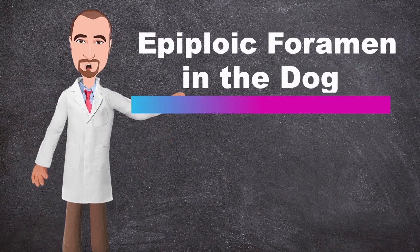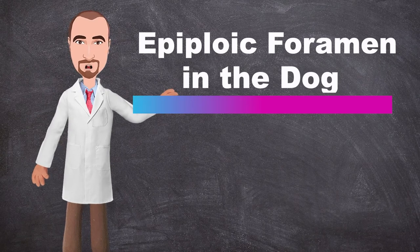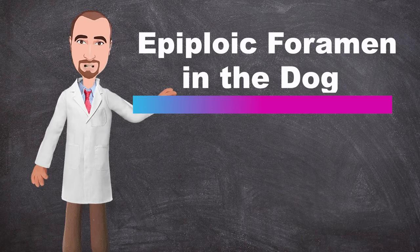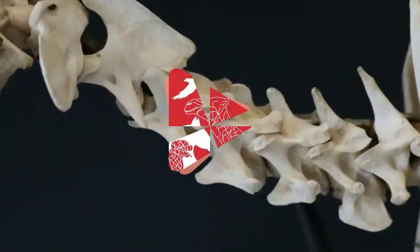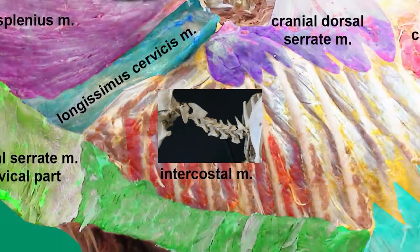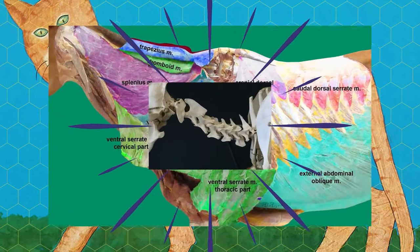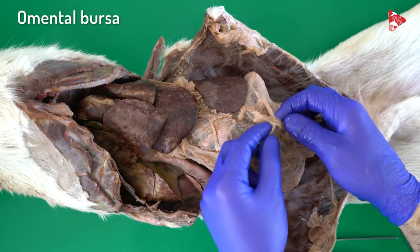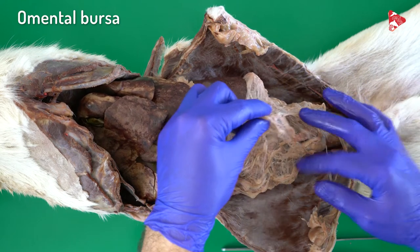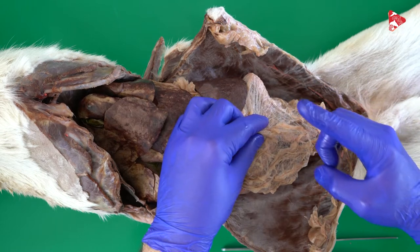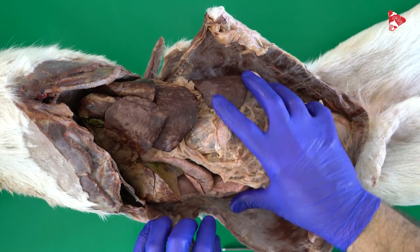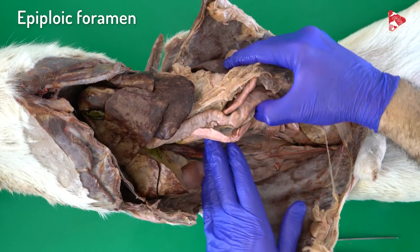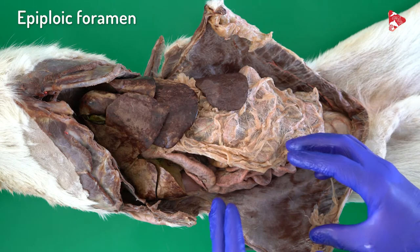Hello everyone. In this video we will talk about the epiploic foramen, the only normal opening to the omental bursa. The omental bursa is completely closed and there is no opening to the bursa except for one way, which is called the epiploic foramen.